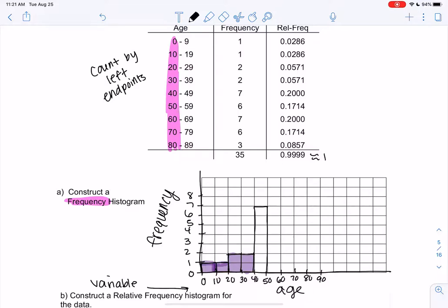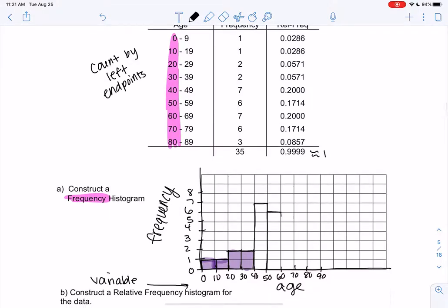The next one, 50 through 59, we're only going to go up to 6. So we're just drawing bars. And then 60 through 69, back up to 7, back down to 6, and then the final one will be 3. And then you don't have to shade it in, but it is a little hard to see, so I'm just going to shade it in to make it look a little nicer. And that's a histogram.